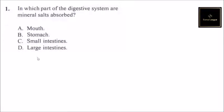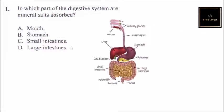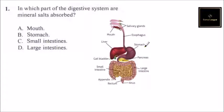Digestion starts in the mouth. In the mouth we have salivary glands. Then the food gets through the esophagus and into the stomach, where it is further mixed with digestive juices.